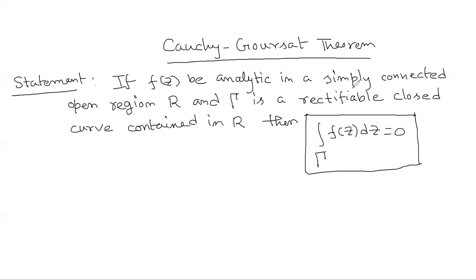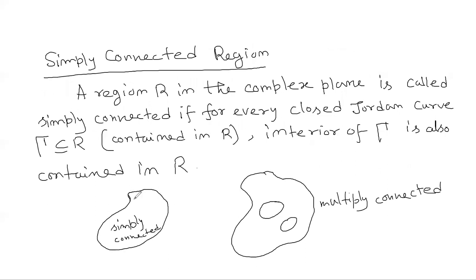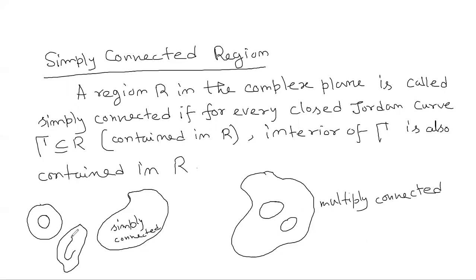Now let us understand what it says. You need to take a simply connected region. This is an example of a simply connected region, and this is also an example of a simply connected region. In this region, if you take a closed Jordan curve — I have explained all those things in detail in my video regarding curves in the complex plane — so just now we consider a closed Jordan curve like this.